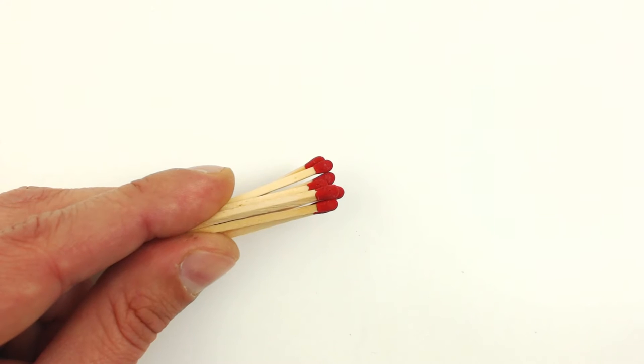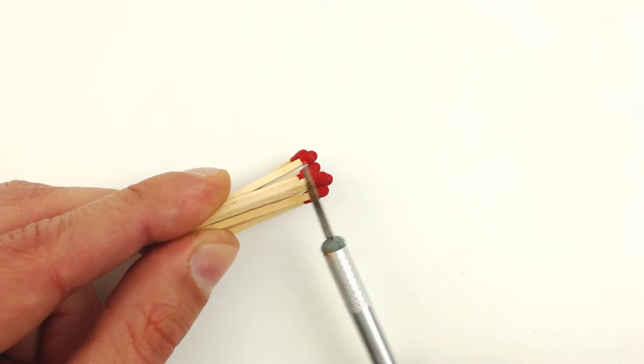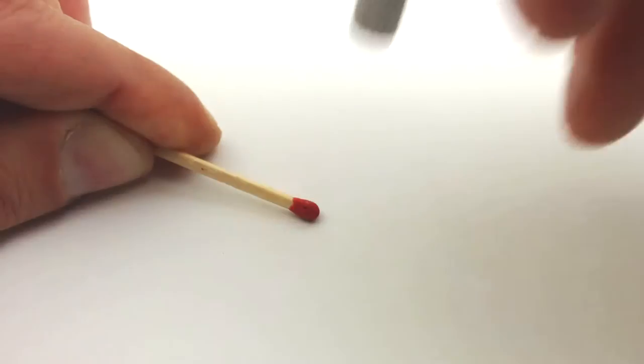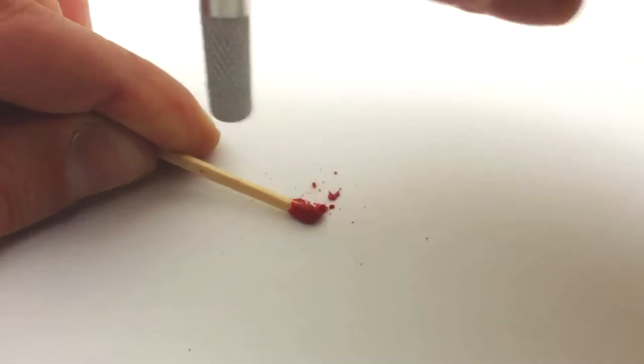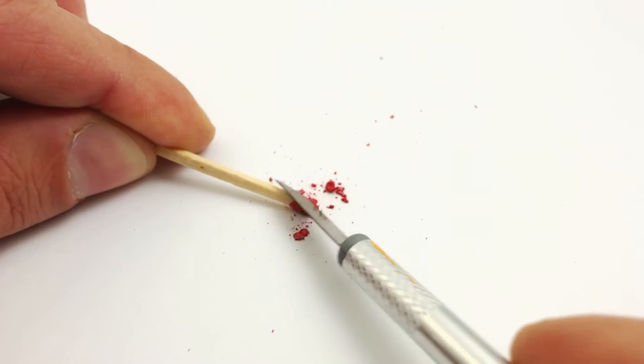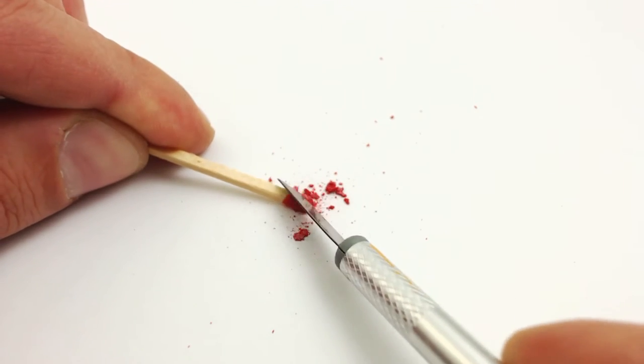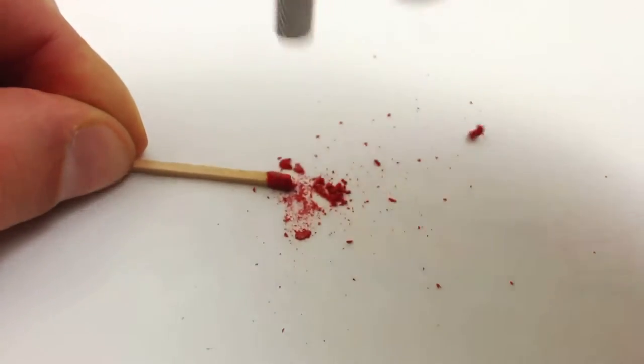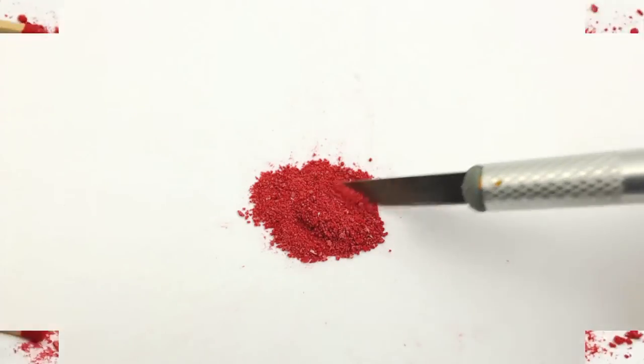Continue with the matches. One by one, scrape and tap off the tips using your cutter. Try and collect as much as possible without any splinters or pieces of wood. Once you've finished with all 10 matches, it will look like this.